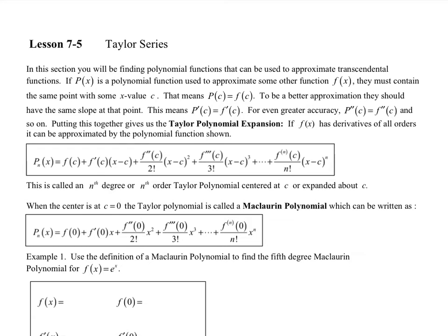This is section 7.5 on Taylor series. With Taylor series, we want to get a polynomial to approximate functions we've seen before. To get these approximations, we want to make sure we include a point — if I'm making a good approximation around x equal to c, that point should be on the function and also on the approximation.